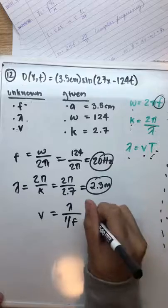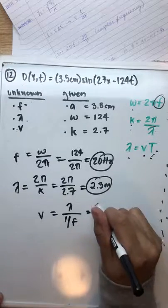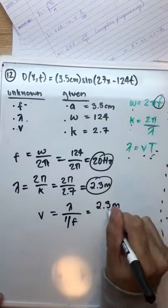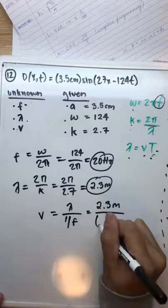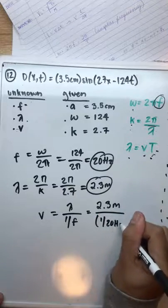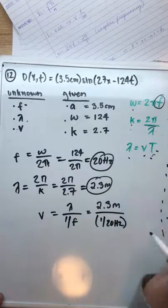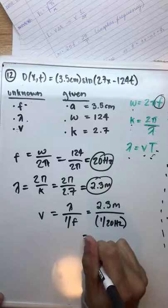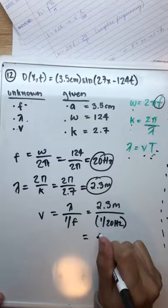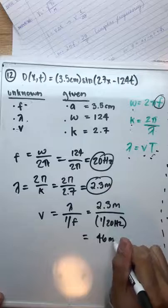And we can just replace that and rearrange the equation for us to get velocity, which is wavelength over 1 over frequency. And that is going to be 2.3 meters over 1 over 20 hertz, and we end up with a final velocity of 46 meters per second.